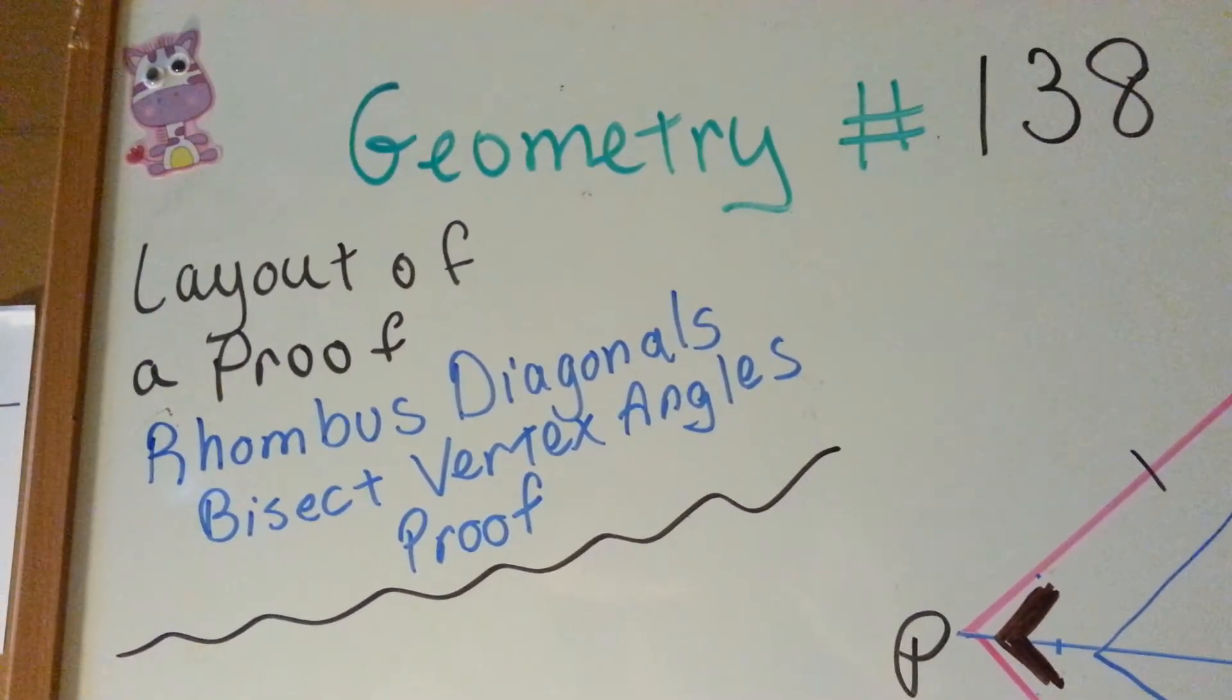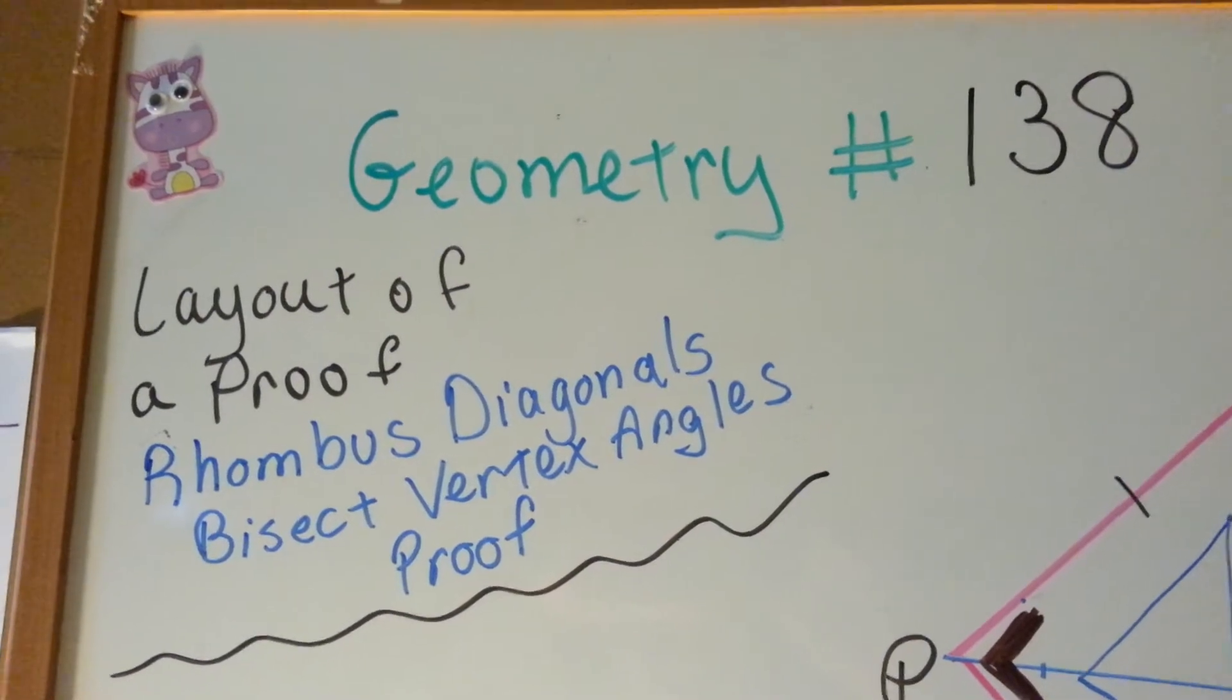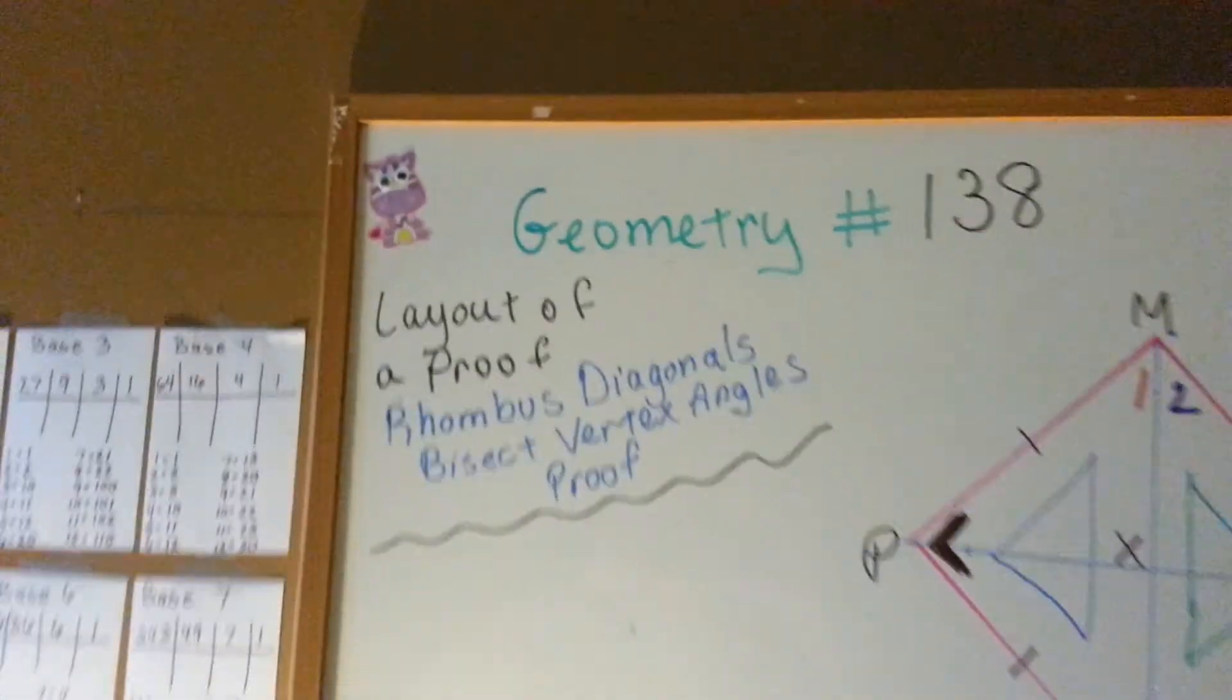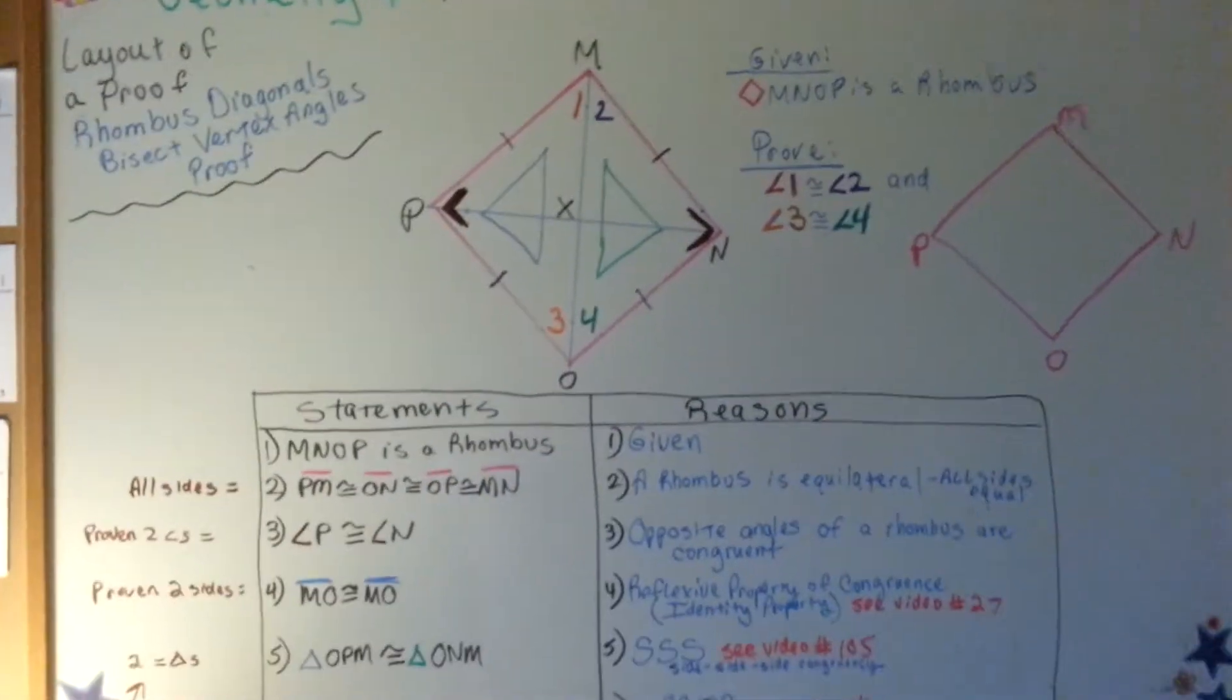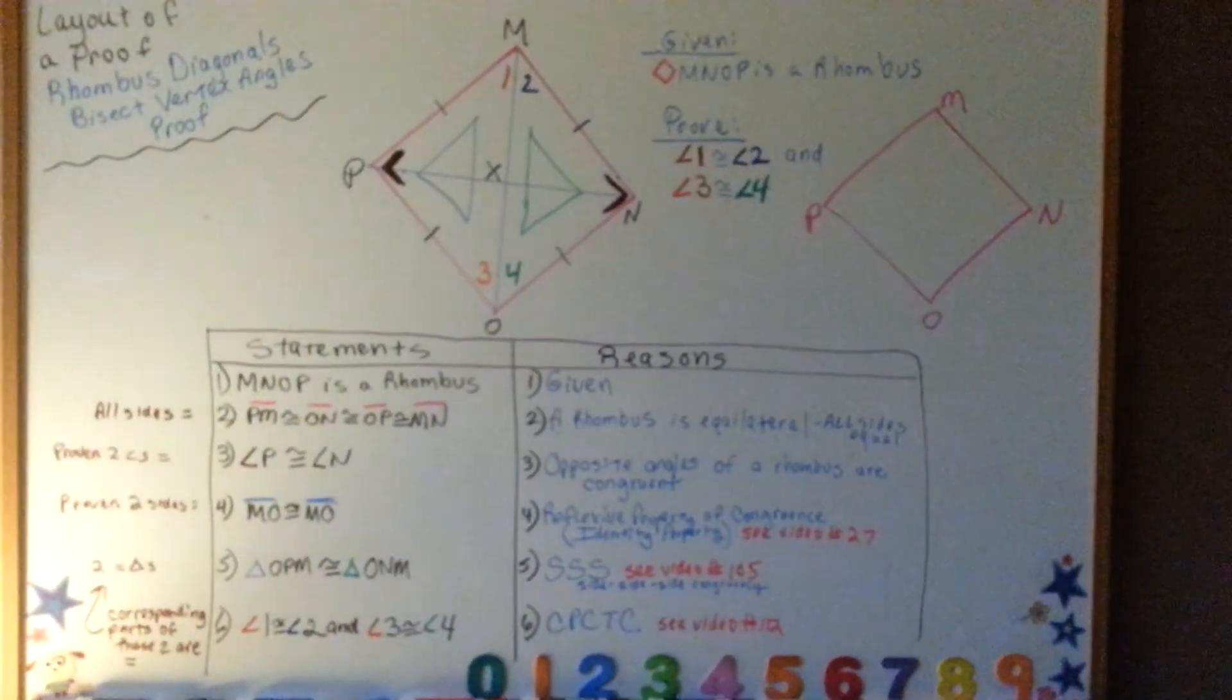Layout of a Proof: Rhombus Diagonals Bisect Vertex Angles Proof. I'm going to take a step back so you can see the whole board before we zoom in.